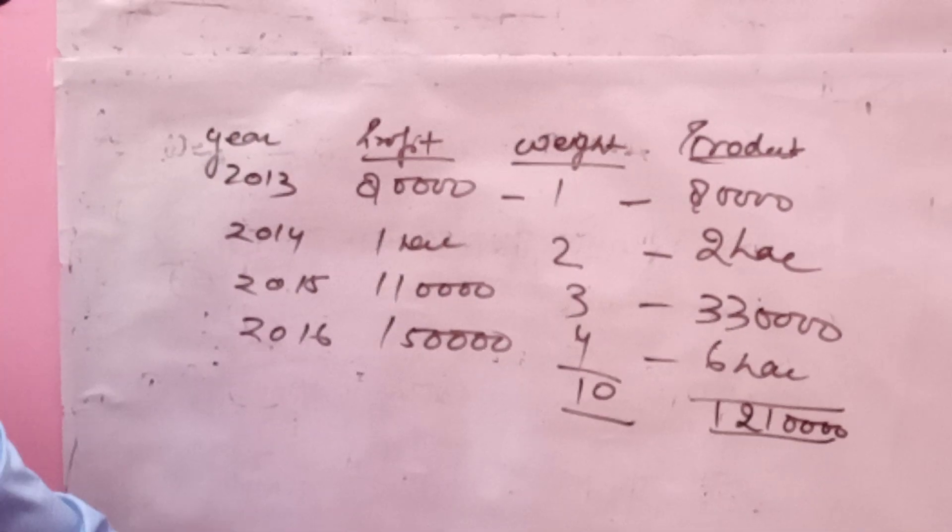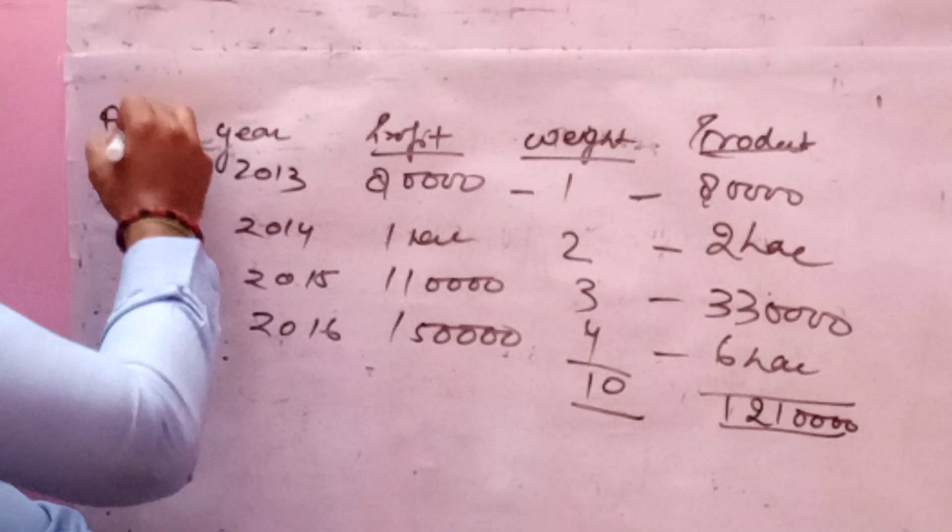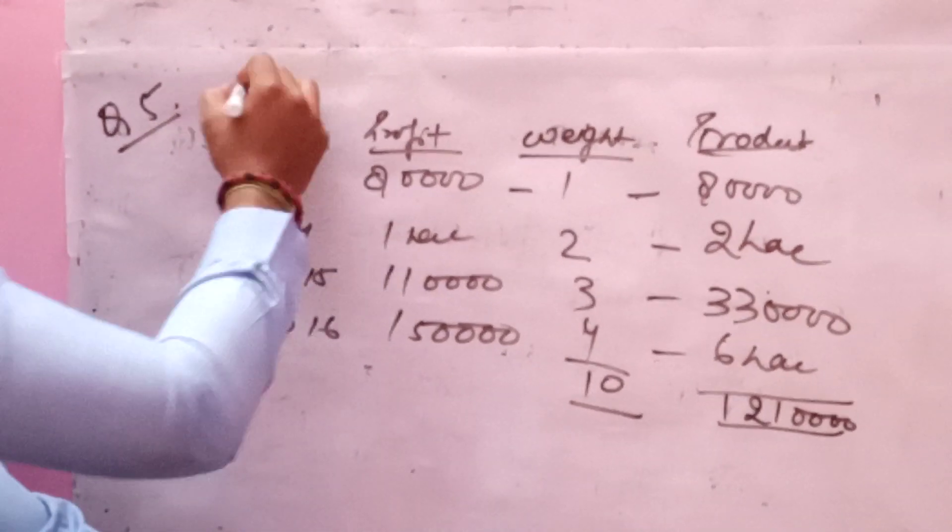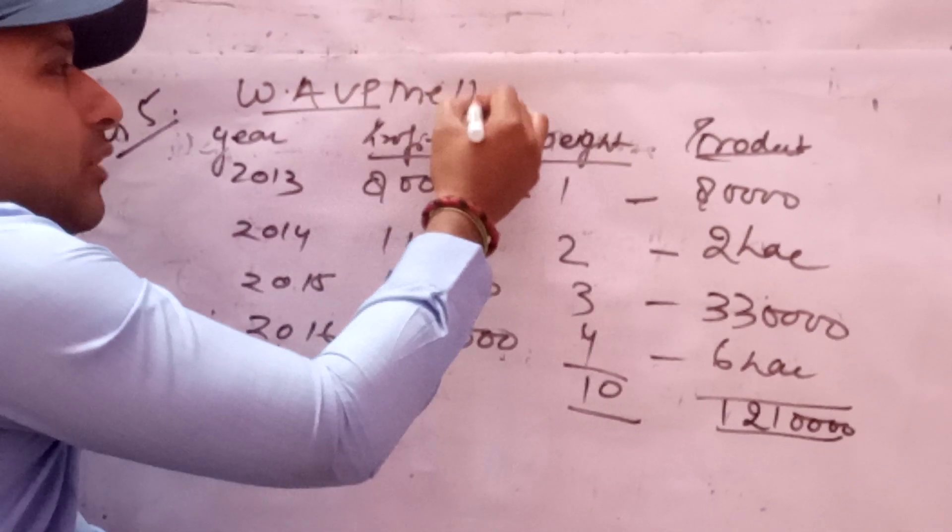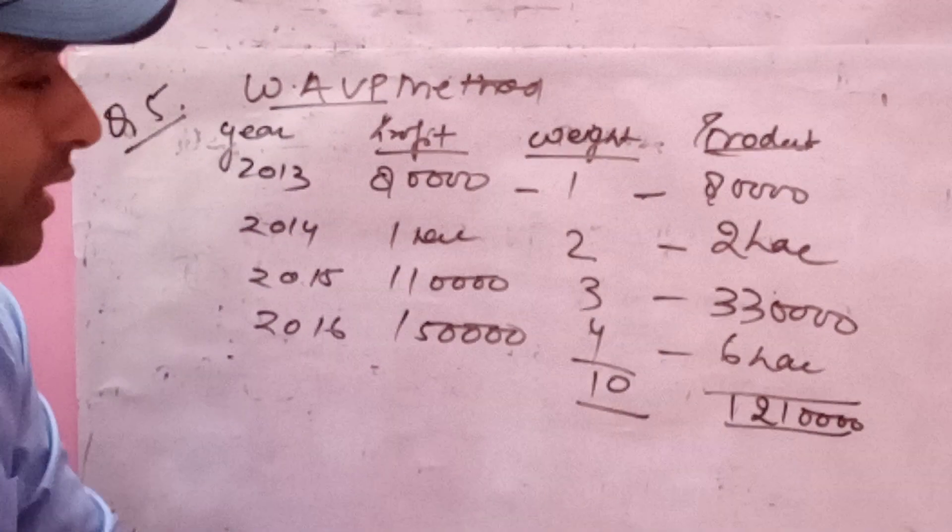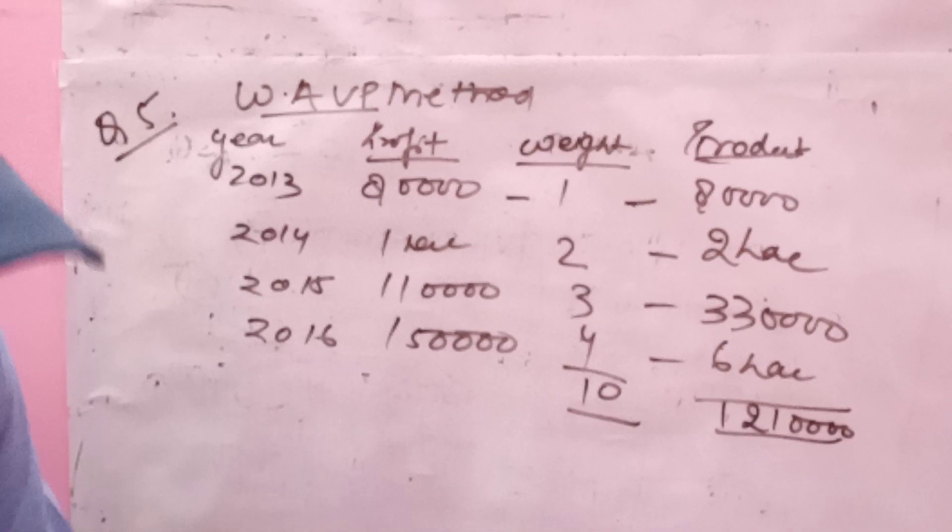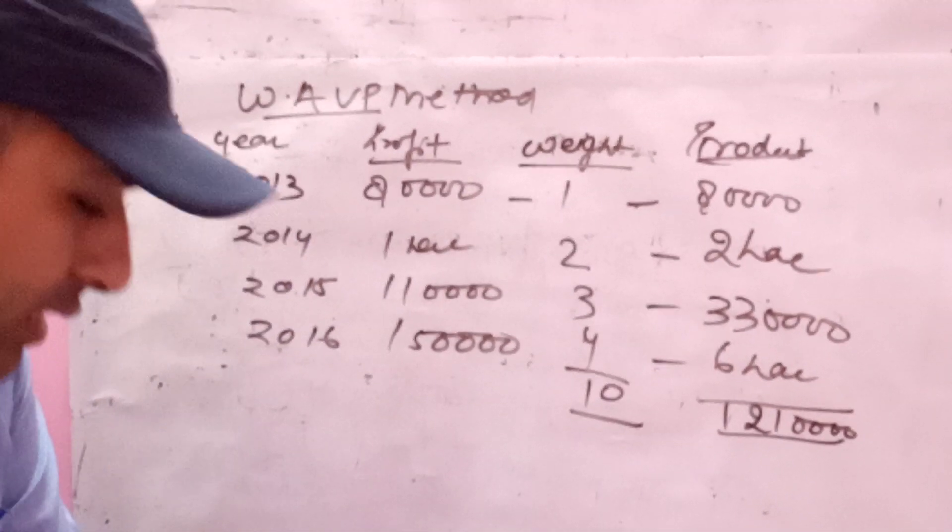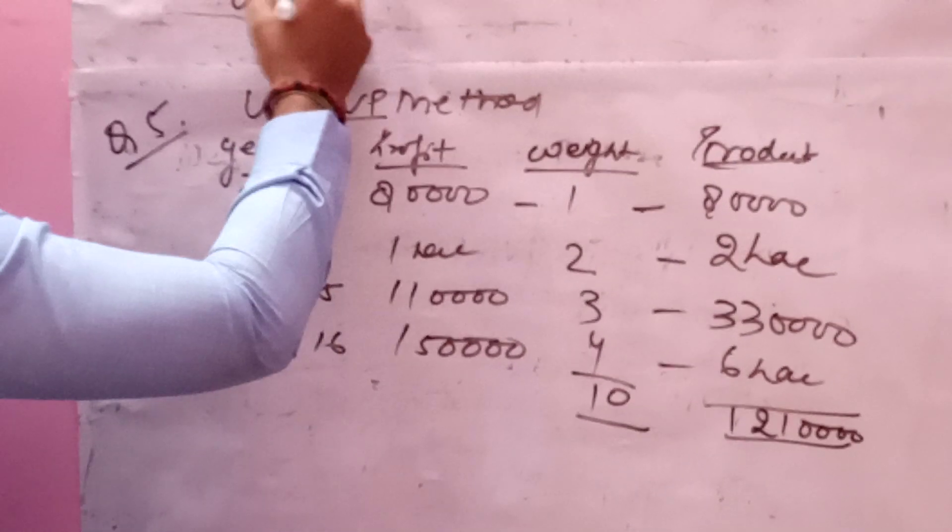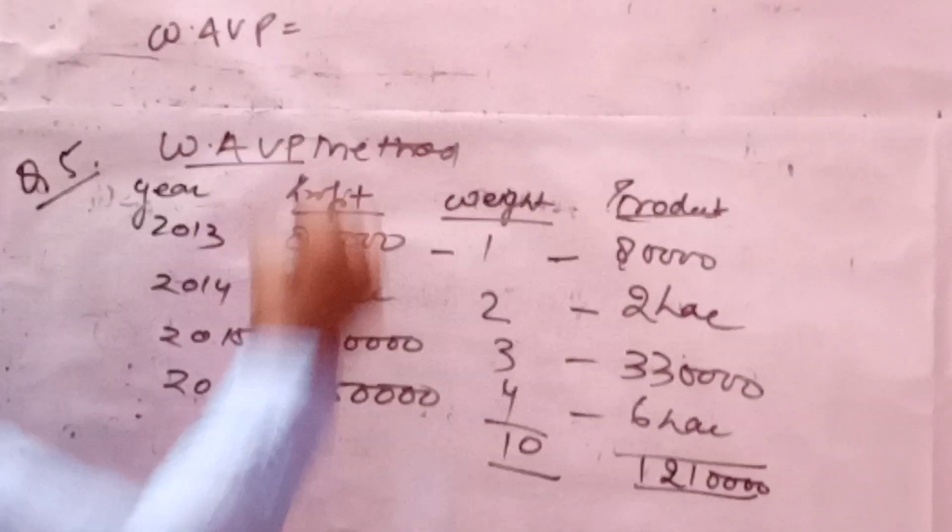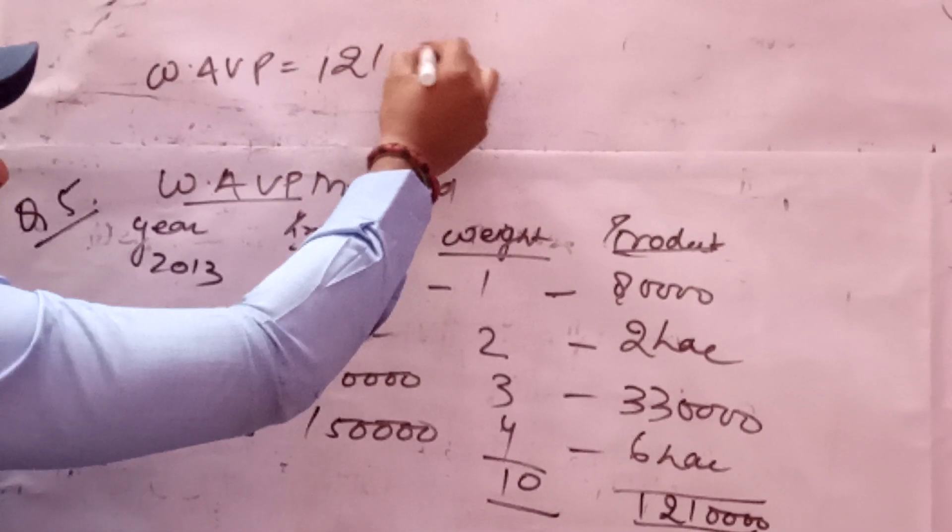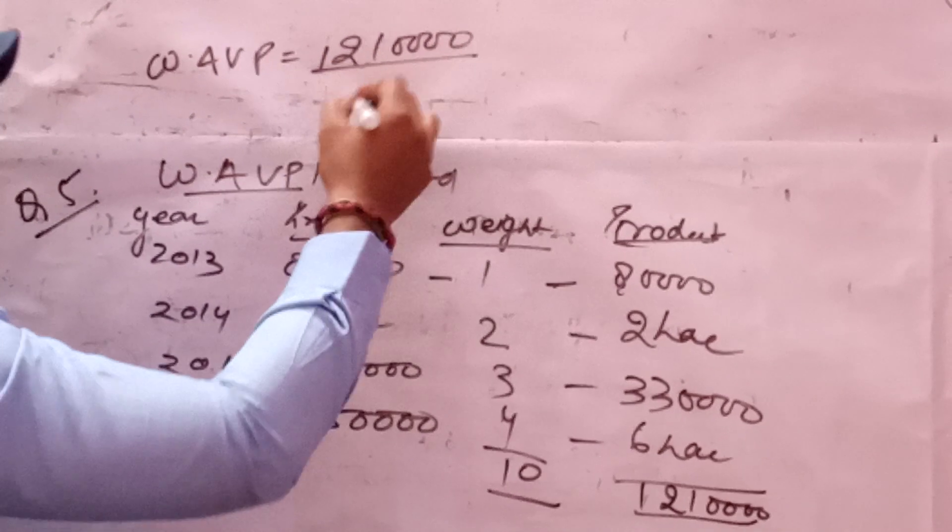Question number 5: Weighted average profit method. The formula is weighted average profit equals total products divided by weight. Total products is 12,80,000 divided by 10 equals 1,28,000.